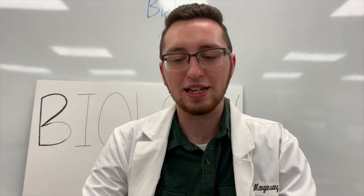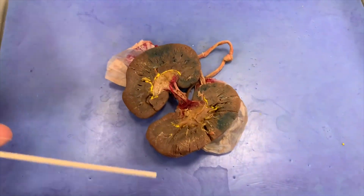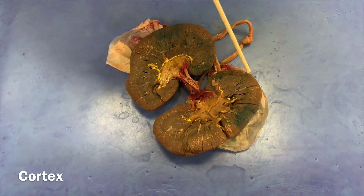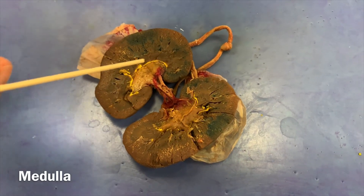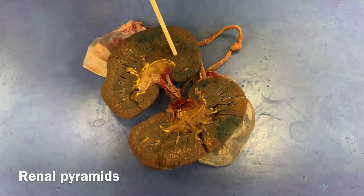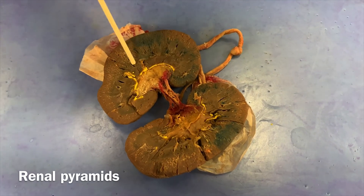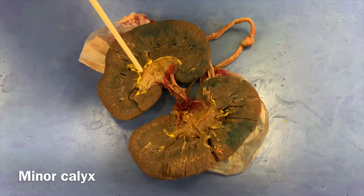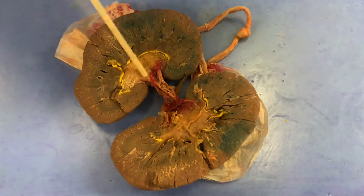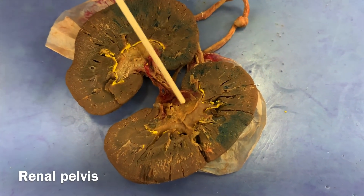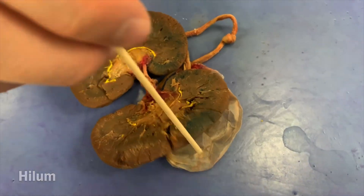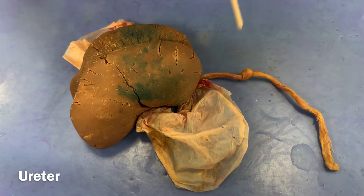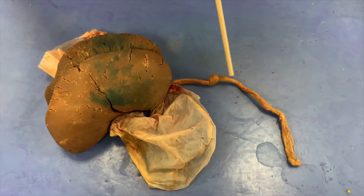Now we're going to look at the kidney again on a dissected kidney. With the outer layer, we've got the cortex. In here we have the medulla region. If you look really closely, you can kind of see the renal pyramids right here. You have the minor calyx right here. Going down, you can see the renal pelvis in this region, leading to the hilum, which is the opening that all these are passing through. That leads to your ureter, which is this tube right here.